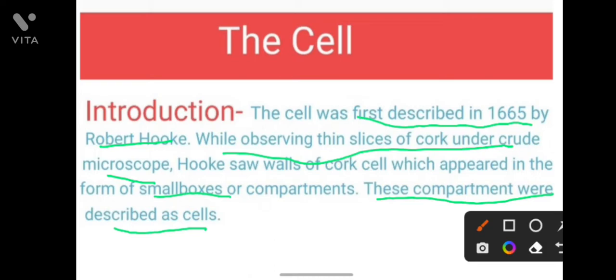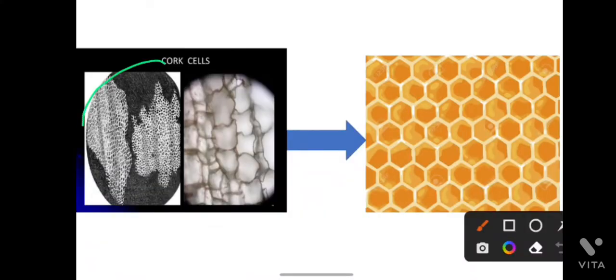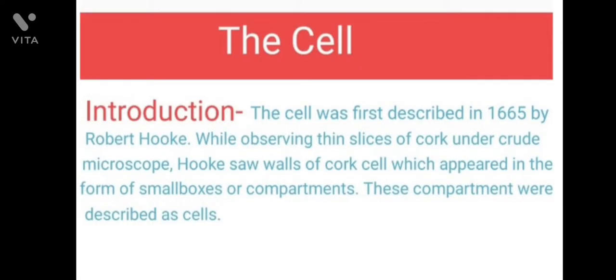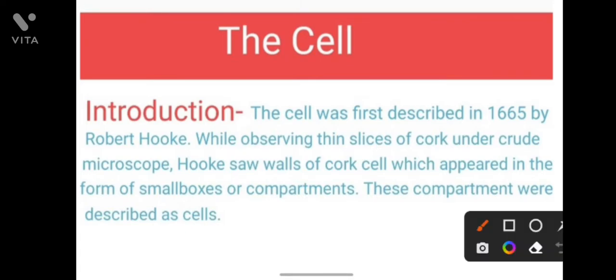A branch of a tree is cut into thin slices and viewed under the microscope. He saw some kind of structure — compartments and small boxes — and he gave the name 'cell' to these compartments. This is the discovery of the cell.